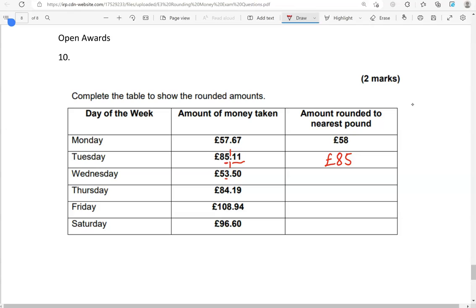Looking at the next one, again, that's the cut-off point. Looking on the right, that's 50 pence. So, 50 and above, we'll round up. So, this will become £54. Again, looking here, we've got 19 pence. So, that's below 50. So, we're going to keep this as £84. Looking at this one, we've got 94 pence. So, that's above 50. We're going to round this to £109. Final one, we've got 60. Again, that's above 50. So, we're going to round this to £97.